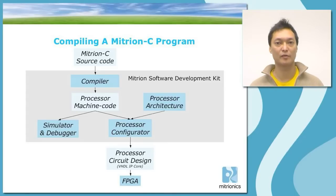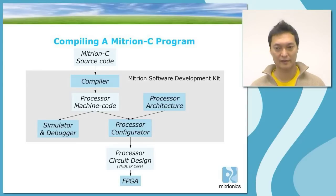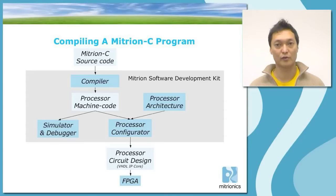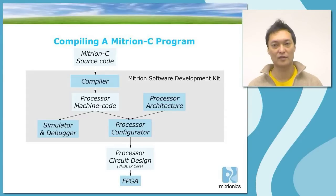This is a diagram displaying the process of compiling a Mitron C program. You start out with Mitron C source code at the top, go through the compiler getting the processor machine code. The straight-line path for this would then go into the processor configurator and configure a processor for your original source code. That would give your processor circuit design, which is in the shape of a VHDL IP core. The VHDL IP core is then passed through standard place and route and synthesis tools, and the resulting bit file can then be placed into an FPGA.